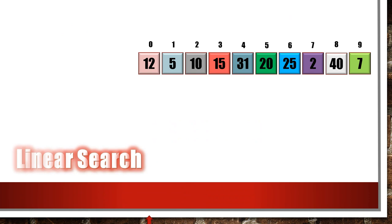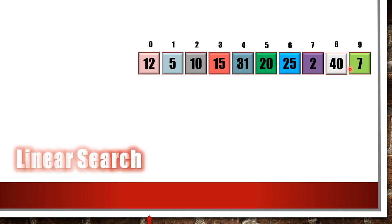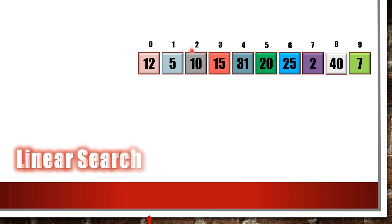Now we are going to see the linear search algorithm. Here you can see a list of array elements given in boxes, which represent the array. On top you can see the index values, or position values of the array. It starts from 0 and goes on 1, 2, 3, 4, till 9. Since there are 10 numbers, the position values will be from 0 to 9.